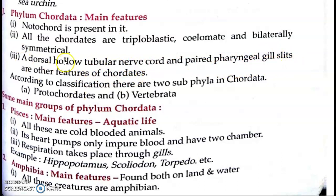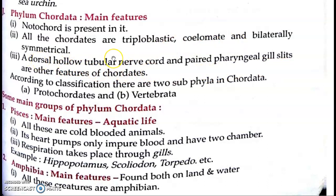Toh dekhen, jahan par Chordata ki baat aati hai, toh aapko pata hona chahiye: Chordata ka matlab hai jinke embryonic development ke time Notochord present hoti hai. Aur yeh Notochord zaroori nahin hai ki sirf embryonic stage mein ho — yeh kisi-kisi adult animal mein bhi paai jaati hai. Notochord present hoti hai, pharyngeal gill slits bhi present hoti hai, dorsal tubular nerve cord present hoti hai, triploblastic, coelomate, bilaterally symmetrical hote hain.